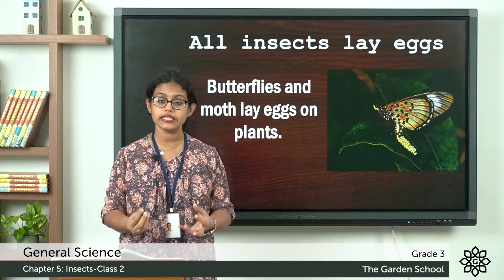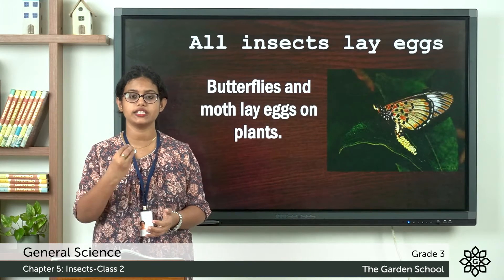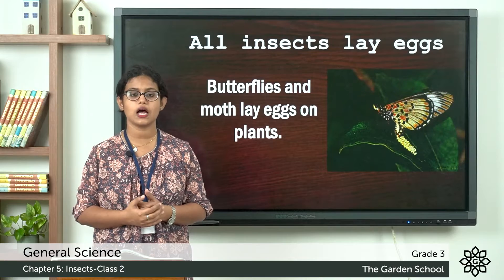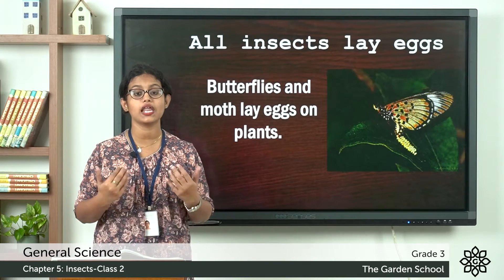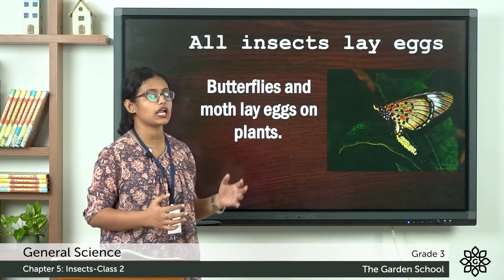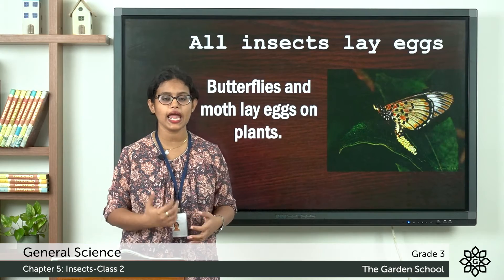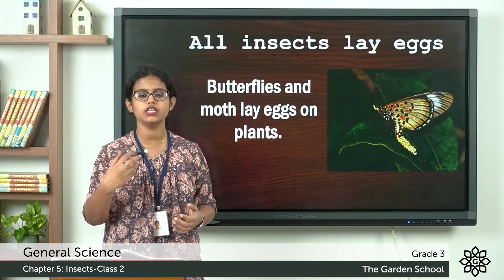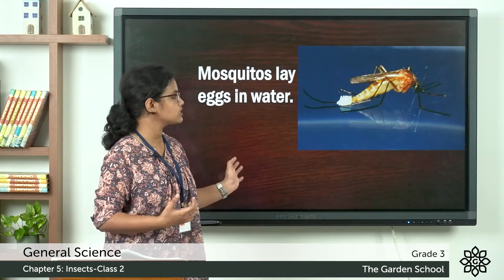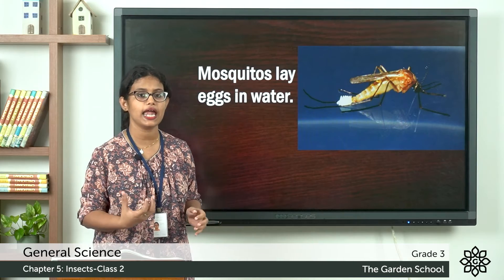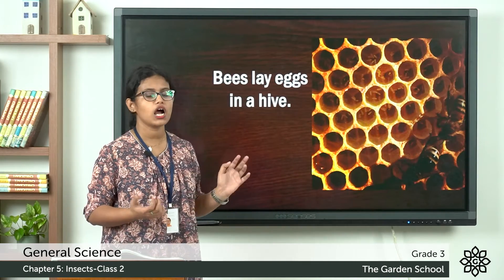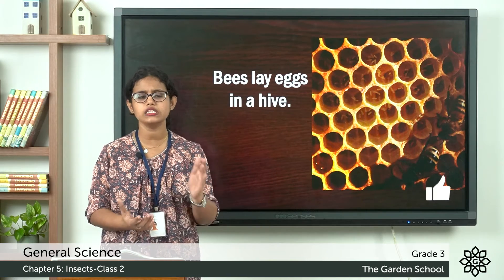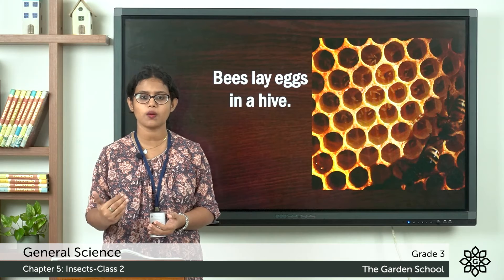All insects lay eggs. The young insects hatch from the eggs. Different insects lay eggs in different places: on plants, some in water, and others elsewhere. For example, butterflies and moths lay eggs on plants. Mosquitoes lay eggs in water. Honeybees lay eggs in the hive. All insects lay eggs and the young ones hatch from the egg.